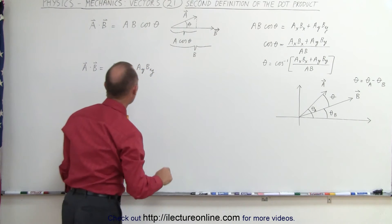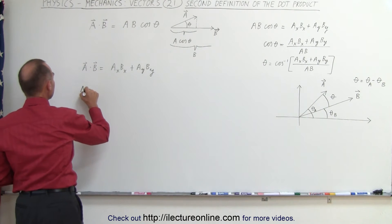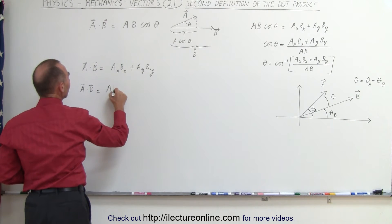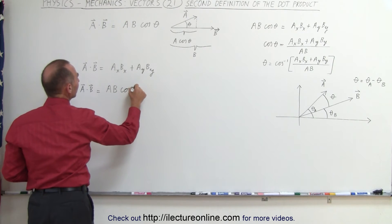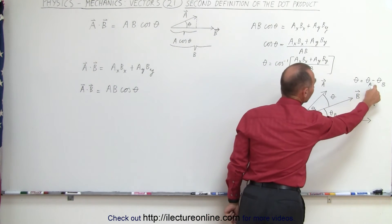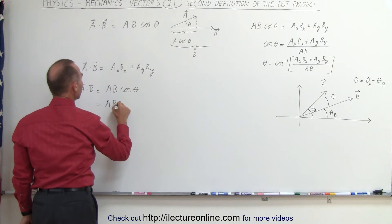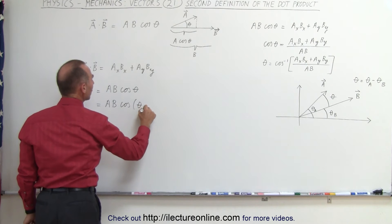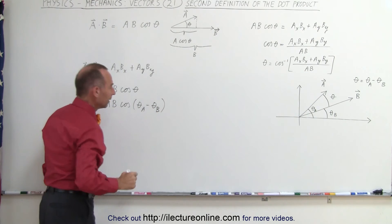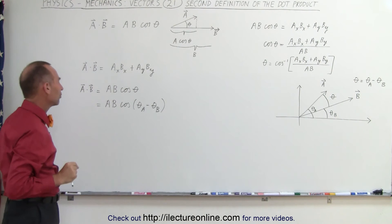Using that information, we should be able to prove this equation. A dot B, using our first definition, is equal to the magnitude of A times the magnitude of B times the cosine of the angle between the two vectors. In this more general case, theta is simply the difference between those two angles, which means this can be written as A times B times the cosine of theta sub A minus theta sub B.